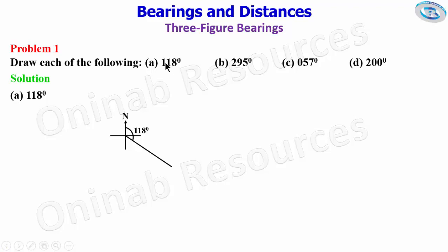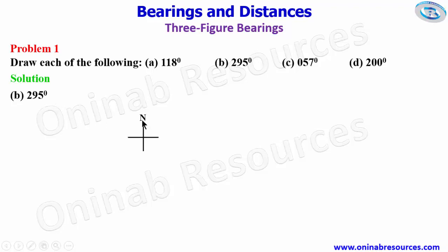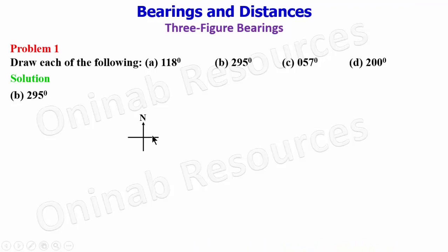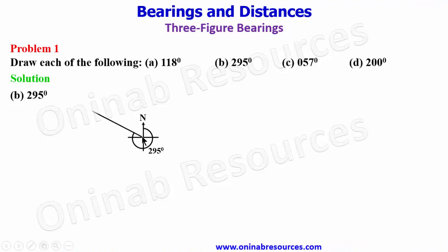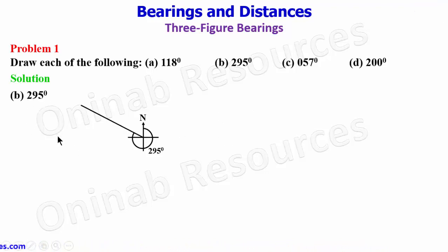Then we go to part b: 295 degrees. Again we have our cardinal point — this is the north pole. We measure from the north and move clockwise. This is 90, remember this is 180, this is 270, so the bearing is in this quadrant. We get the angle here — this is 295 degrees. We now draw the line from the point to pass through where this arc stops. That is the diagram for 295 degrees.